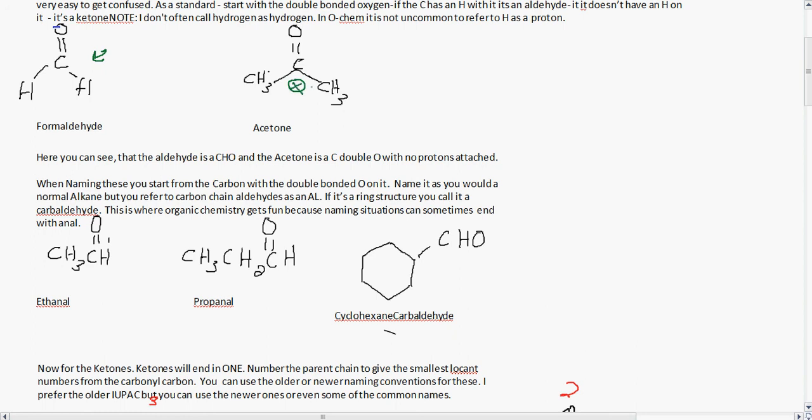Now for the naming part. When naming these, you start from the carbon with a double bonded O on it. You name it as you would any normal alkane, but you refer to the carbon chain aldehydes as AL. If it's a ring structure, you call it a carb aldehyde. This is where organic chemistry gets fun because naming situations can sometimes end with anal. So here you have ethanal, propanal, and cyclohexane carb aldehyde.